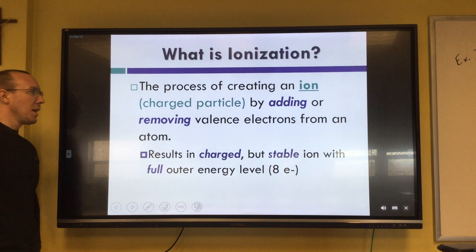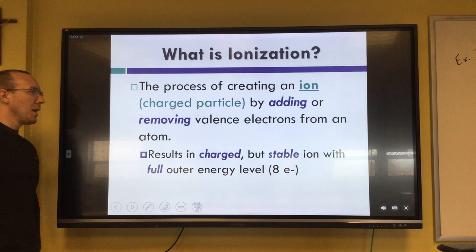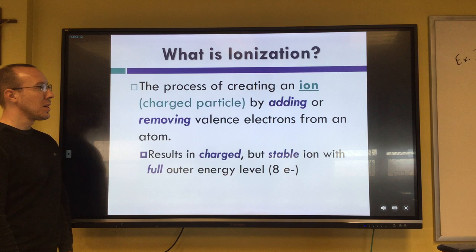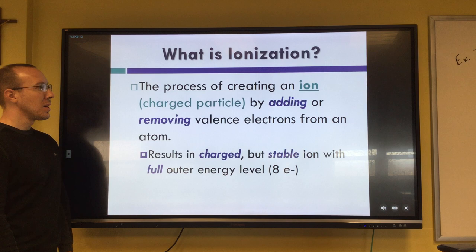An ion is a charged particle. If we have a different number of protons and electrons, it's going to be charged. For example, if there's one proton and zero electrons, it's a one plus because we have one positive charge and no negative charge. If we have more negative charges than positive charges, then it's going to be a negatively charged ion.